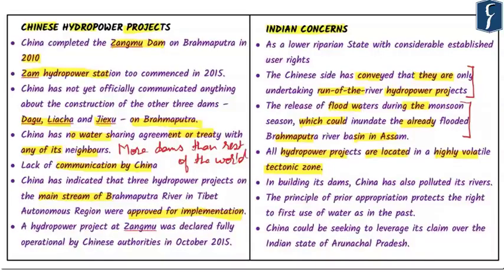In building its dams, China has also polluted its rivers, and the quality of water flowing downstream into India needs to be considered. Disruption of natural flood cycles could adversely affect the rich geo-environmental and biophysical settings in India's northeastern part. Another concern is the principle of prior appropriation, which protects the right of first use of water. Since China is first to build a dam on the Yarlung Tsangpo, it claims priority rights, meaning Indian interests are not being protected.